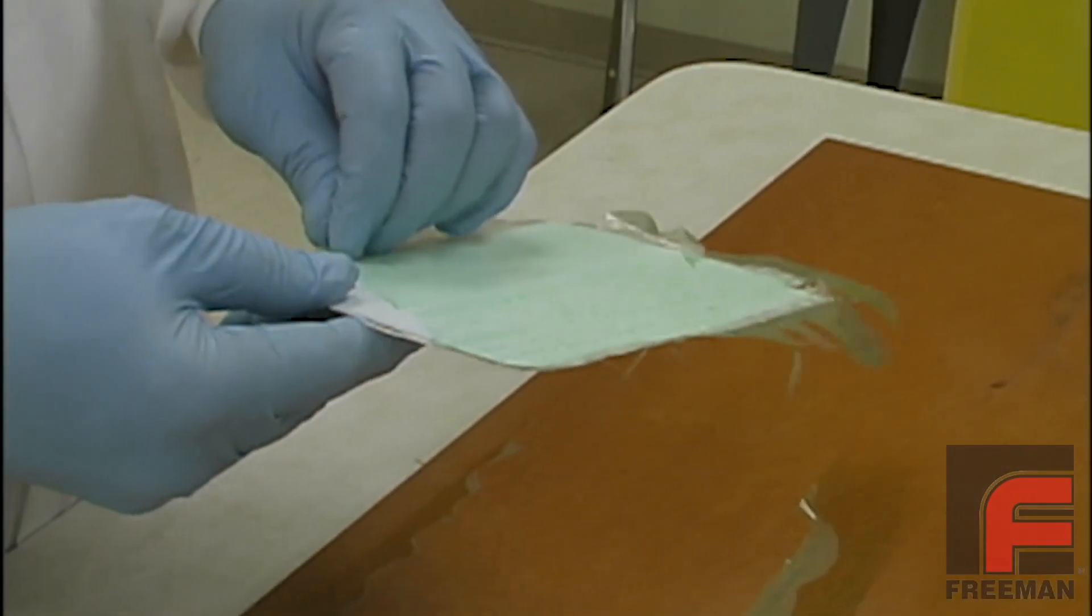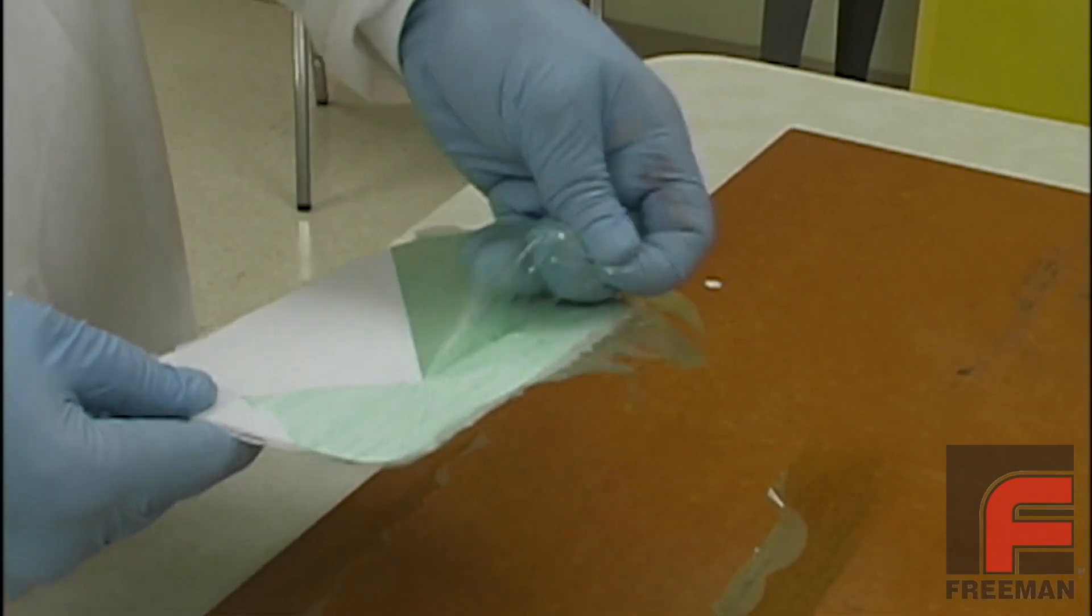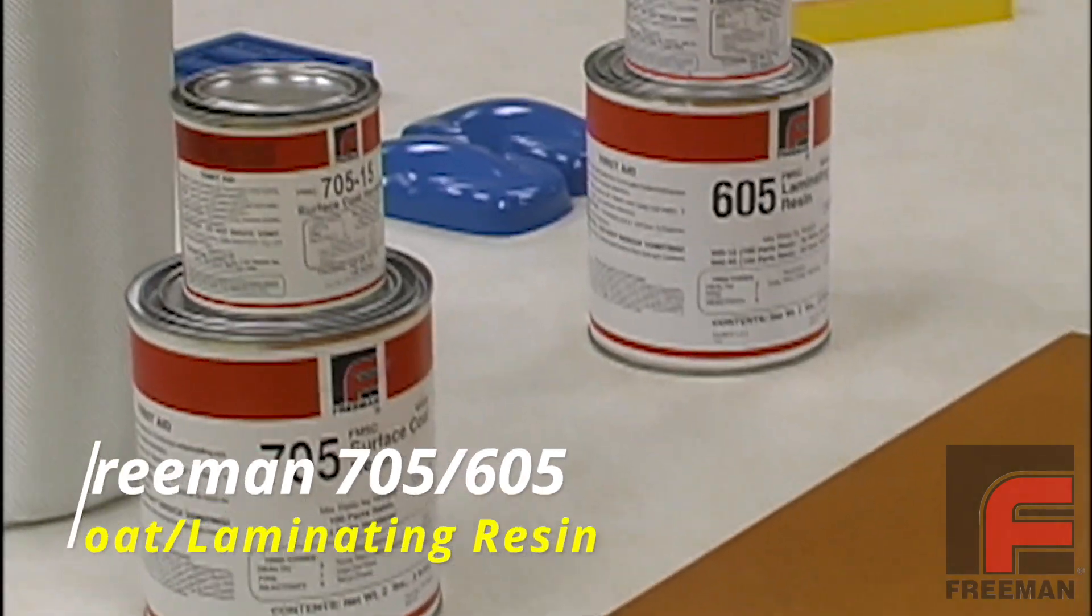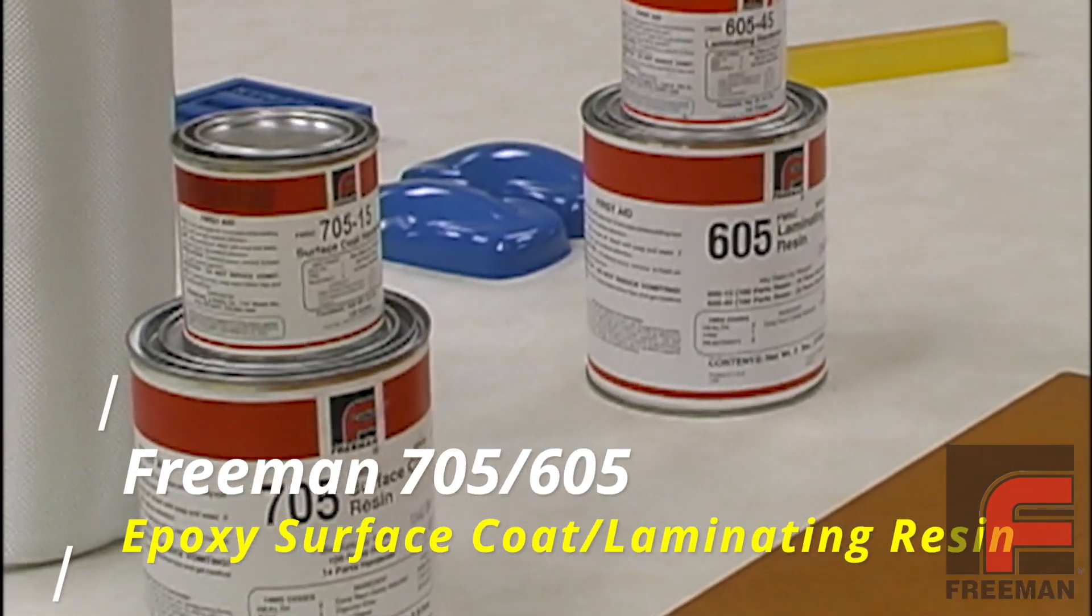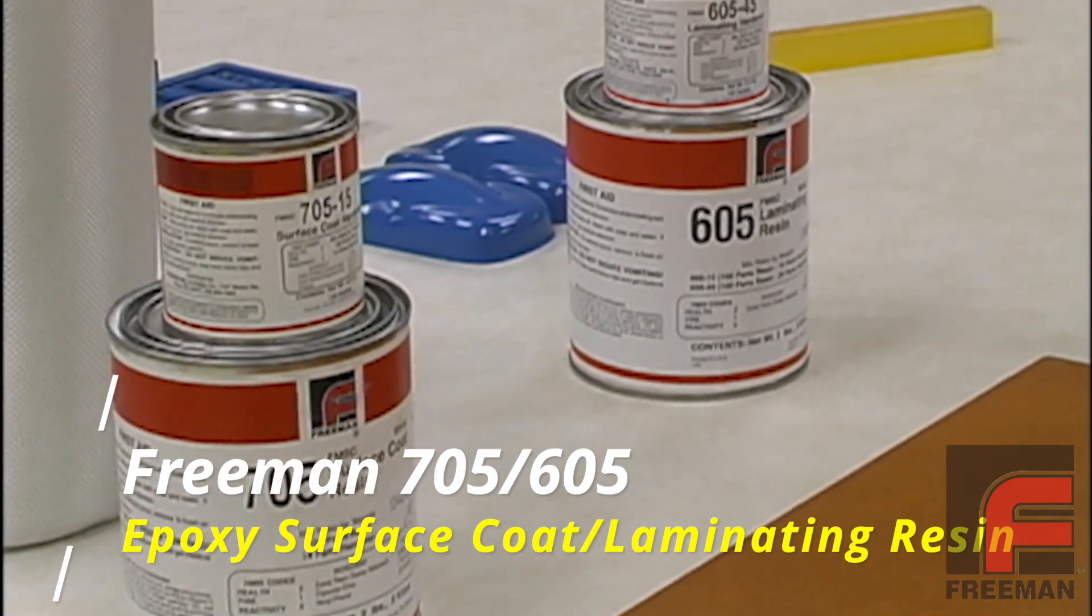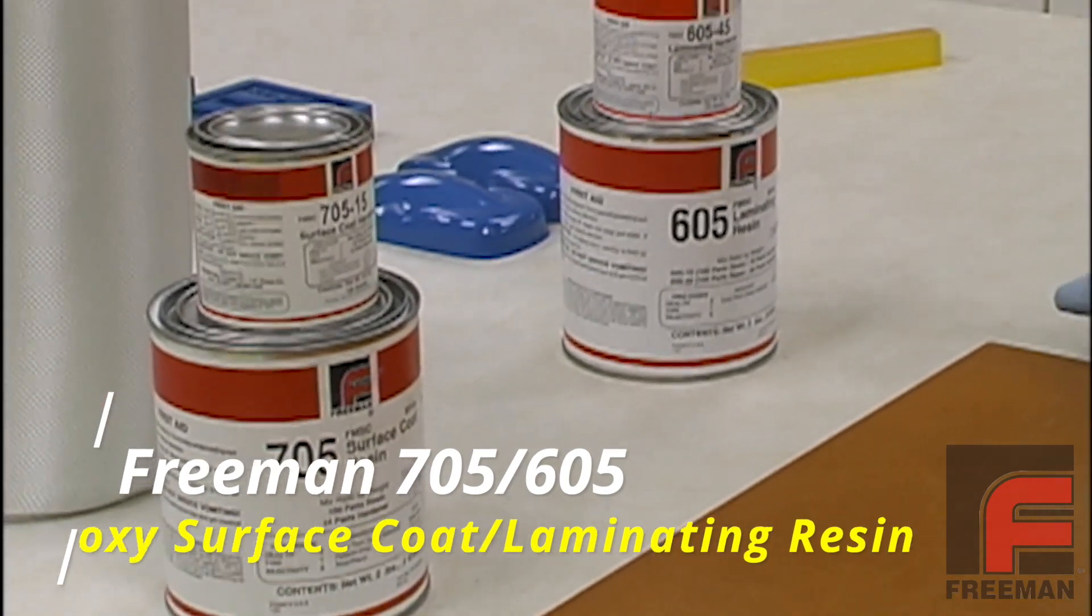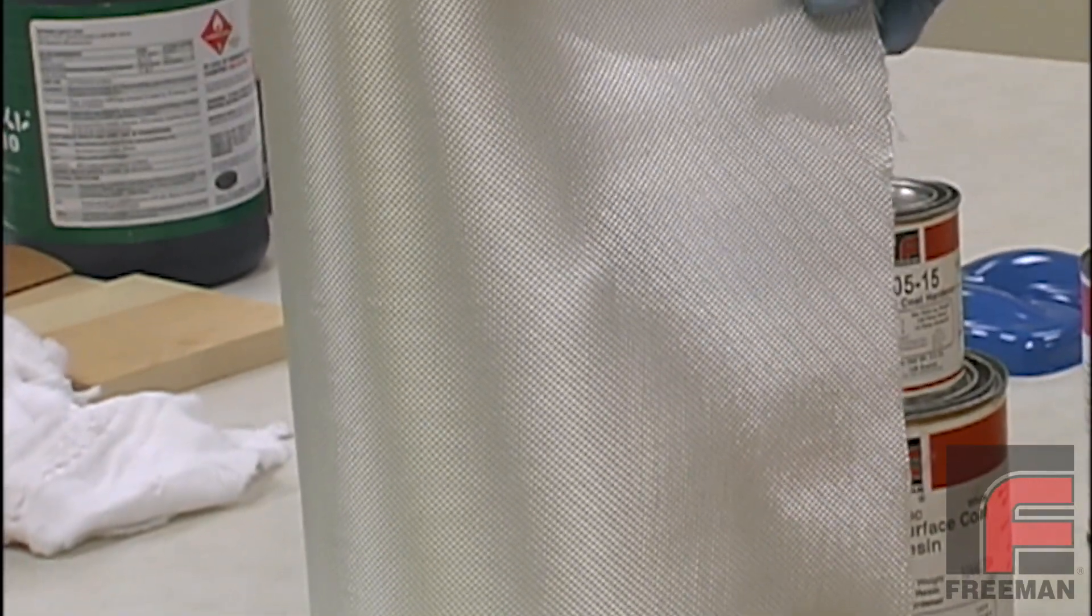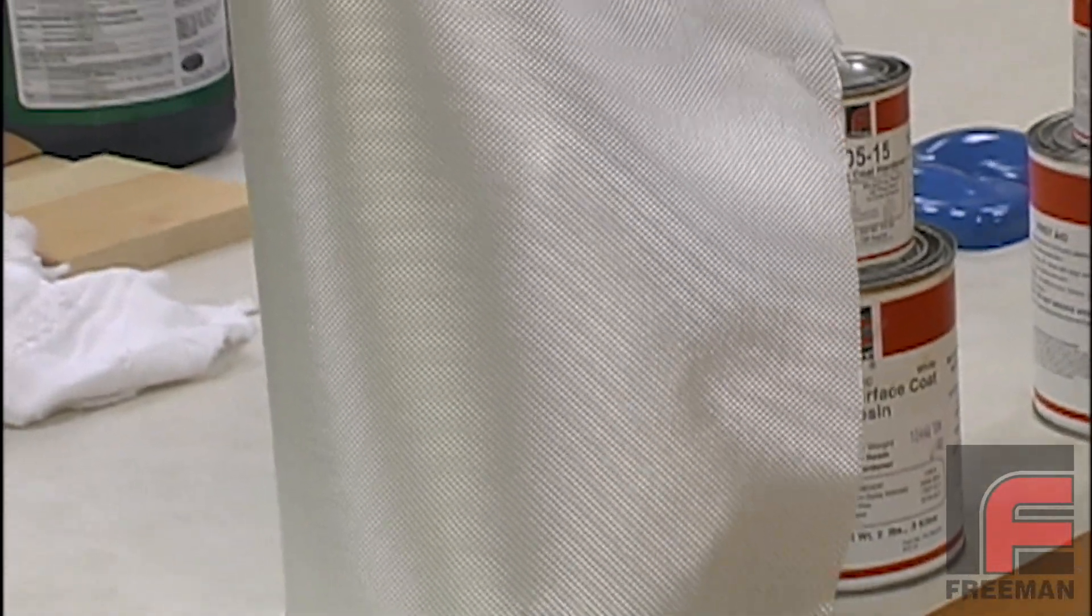We're going to start this section by demonstrating a very basic fiberglass layup using our Freeman 705 epoxy surface coat, Freeman 605 epoxy laminating resin, and a few pieces of fiberglass cloth. We'll construct a simple rectangular layup on a flat board. On a later video, we'll show the same process on a more complex laminate tool.